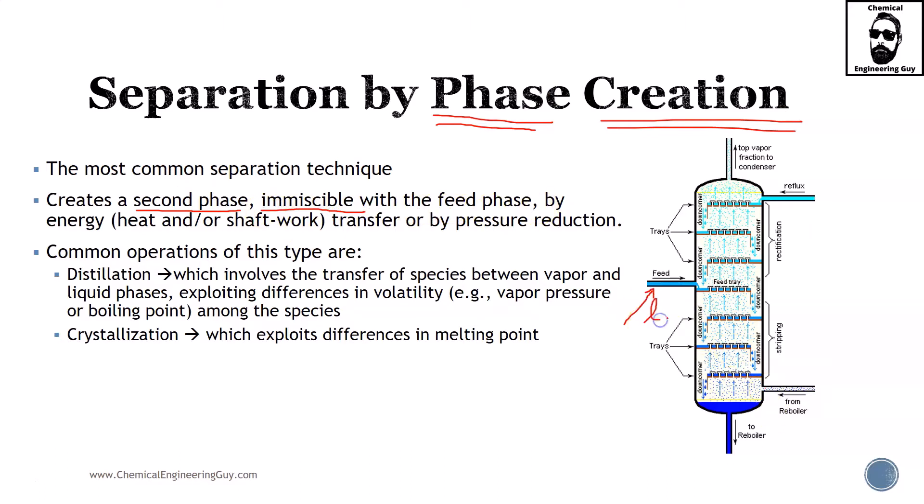So we have our feed, typically will be liquid or a mixture between liquid and vapors. And what we're going to be doing is adding heat right here in the reboiler and removing heat here in the condenser.